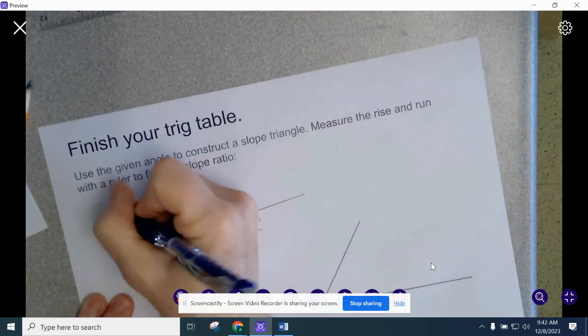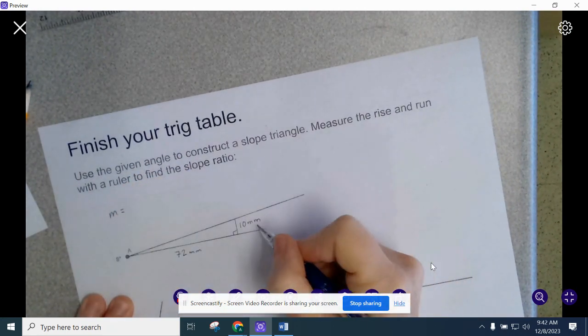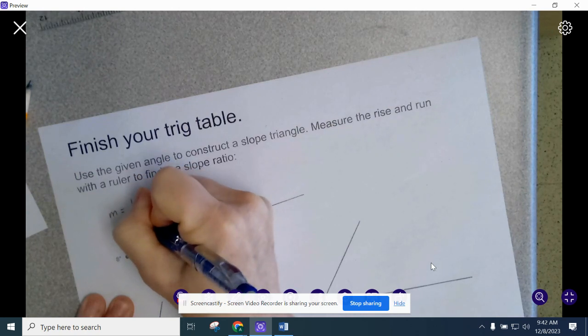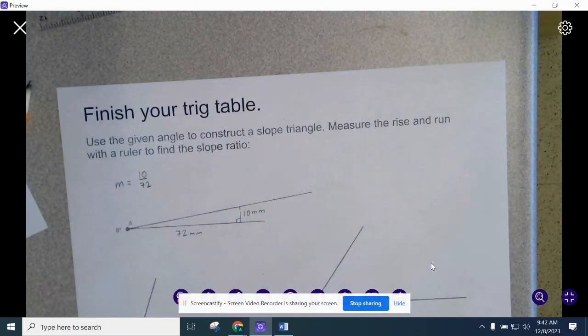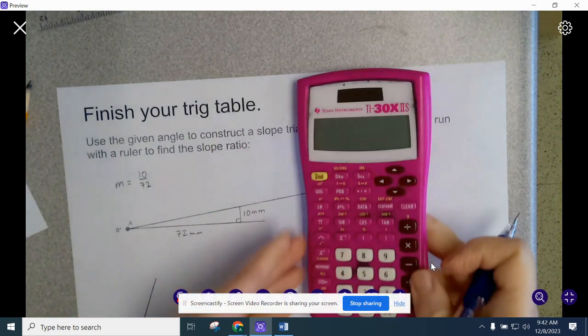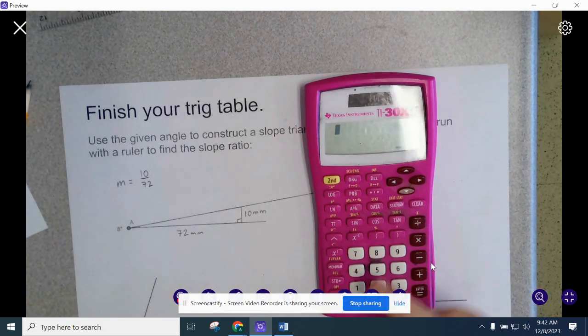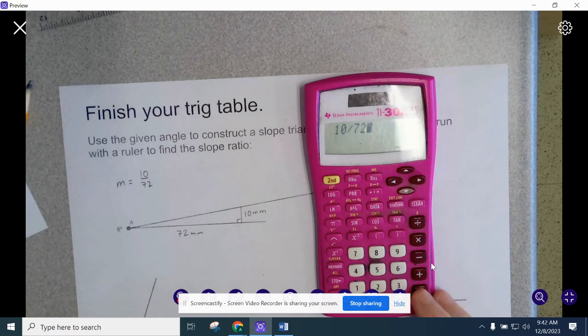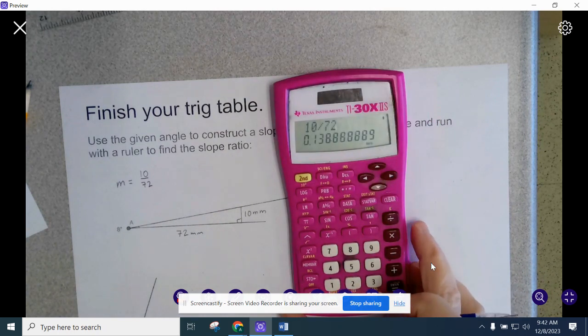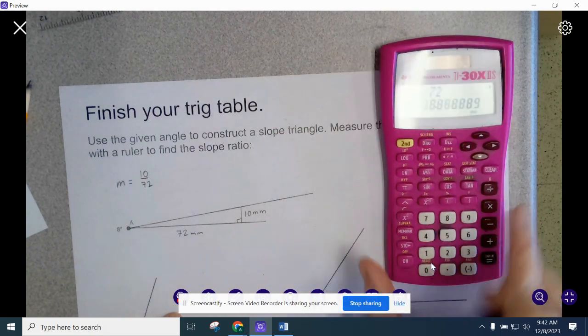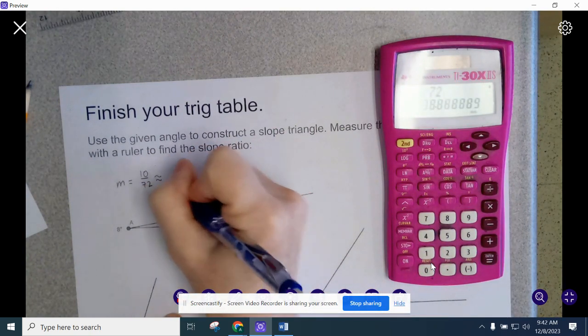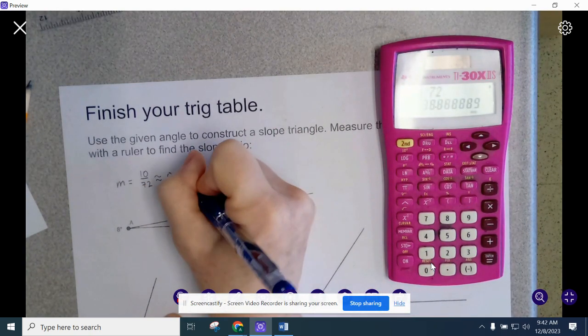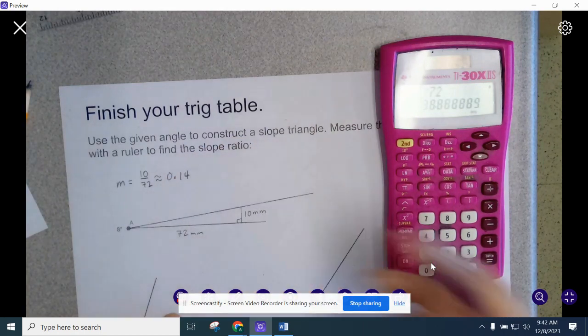So my slope is equal to rise over run. And then I take my calculator and change it to a decimal. So 10 divided by 72 gives me 0.138888888. So that I'm going to round off to 0.14. That would round off to 0.14.